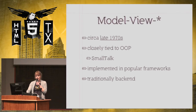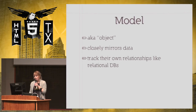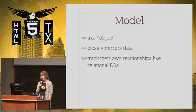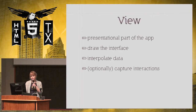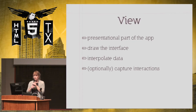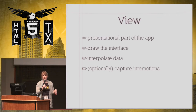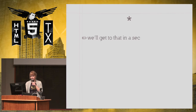The model in the MV-star concept — you can think of it as an object, basically just your data, a place to store data. They tend to relate to each other like tables in a relational database. The view is the presentational part of the application — it draws the interface for you and can interpolate the data from your server. Optionally, it can also track user interaction, but that depends on the variant of star you're using.